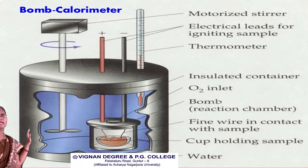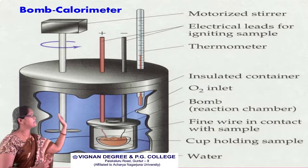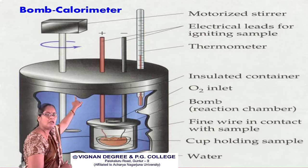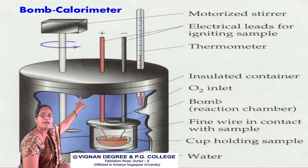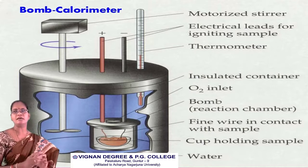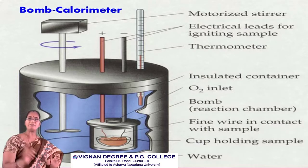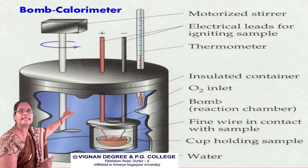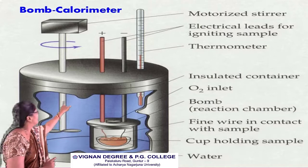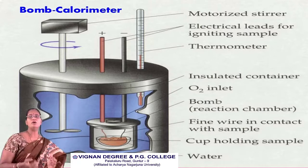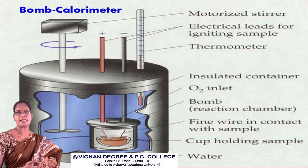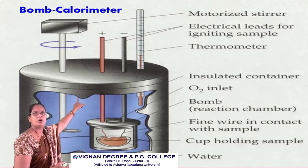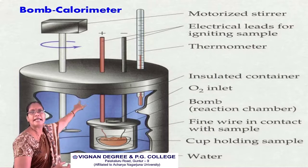The main components present in the bomb calorimeter are: a motorized stirrer, whose function is to stir the water present in the calorimeter so that temperature is evenly distributed throughout the water; and an electrical lead for igniting the sample — the anode and cathode — which provide the power to ignite the food material. Burning in the presence of oxygen is called ignition or combustion.